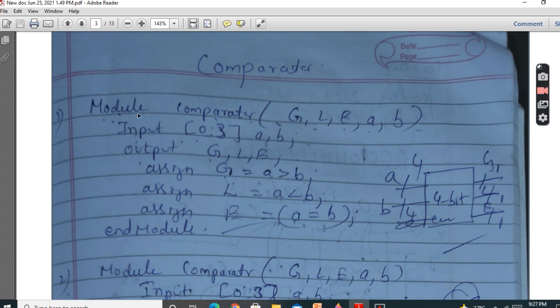So we write it like this. Module comparator. Outputs: G greater, lesser than equal. So G, L, E. Inputs are A, B.